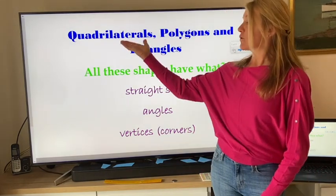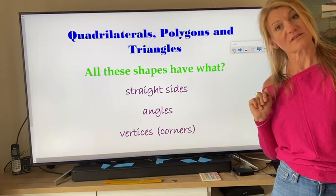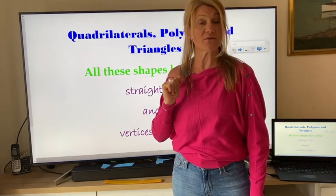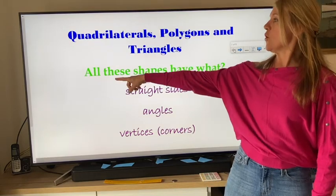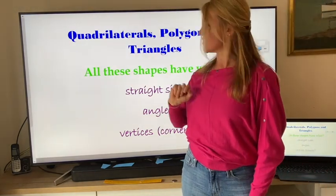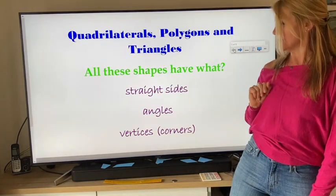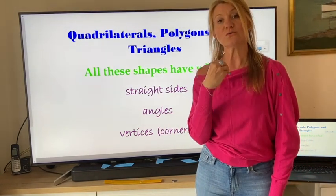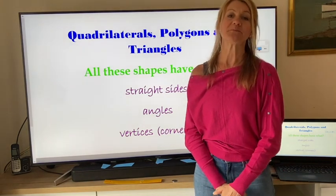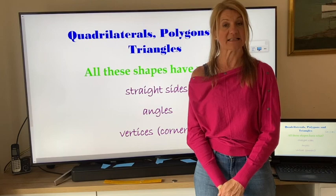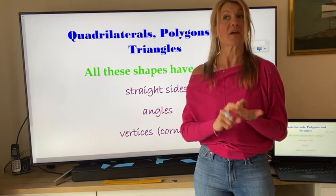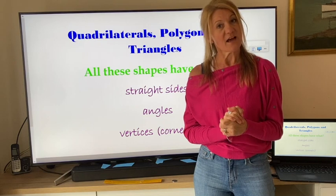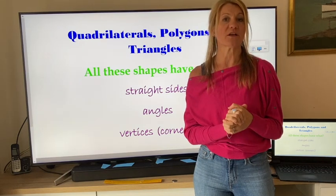So we're going to look at quadrilaterals, polygons and triangles. Now, you will know some of these words and you will remember some of these words and some of them you may not have seen before at all, but we are going to have a look at them. So all of these shapes, quadrilaterals, polygons and triangles, all are shapes that have straight sides. They all have angles and they all have vertices, which are corners. They are all 2D shapes. The next slide I'm going to put up, I would like you to prepare yourselves by getting a pad, a pencil, a rubber and a ruler. So I'm going to put the next screen on and you can pause it. And I want you to have a go at revising and answering the questions that you see.